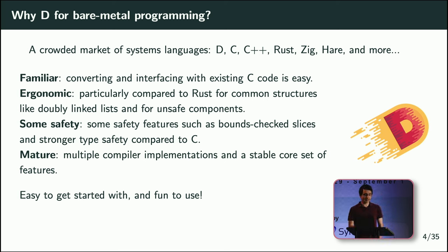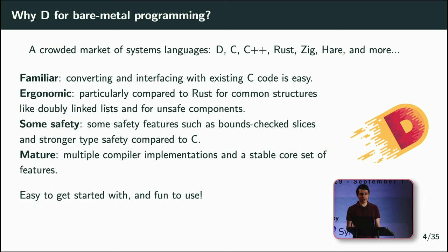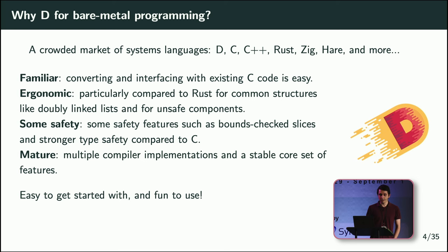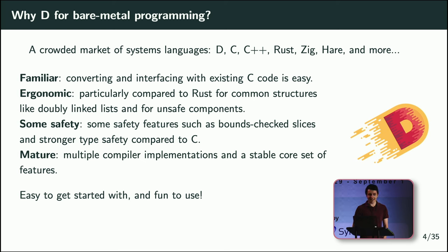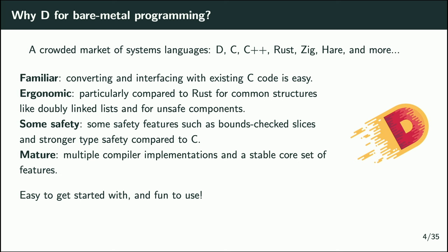D is a language that's been around for a while and has multiple compiler implementations. You can tap into both the GCC and LLVM ecosystems and cross-check across both, giving more confidence in the implementation by testing with multiple compilers. And at the end of the day, it's easy to get started with and fun to use.